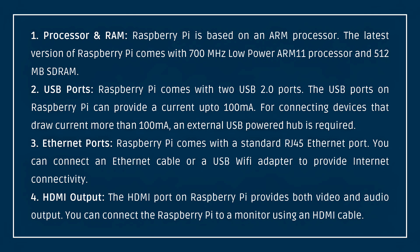Next, Ethernet ports. Raspberry Pi uses a standard RJ45 Ethernet port. If you use an Ethernet cable, you can also use a USB Wi-Fi adapter for Ethernet connectivity. Next, HDMI output. Raspberry Pi provides both HDMI port and audio port. If you use an HDMI cable, you can connect the Raspberry Pi to a display.